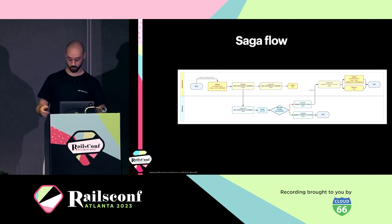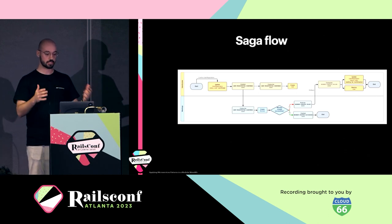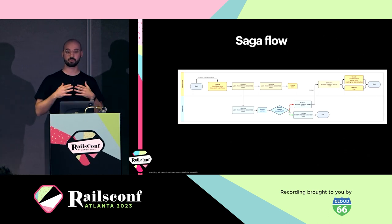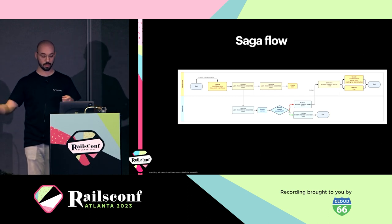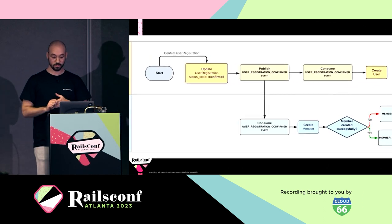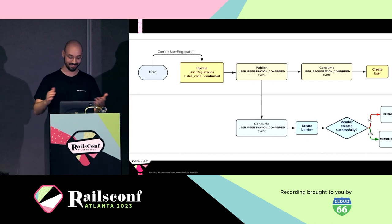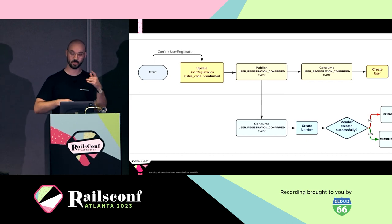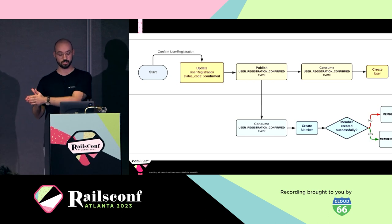We have our databases, our domains, and everything set up for the example. We're going to follow the registration flow for a user: a user registers in our app, inputs their data, and gets sent a confirmation email. The Saga flow starts when they confirm that email.